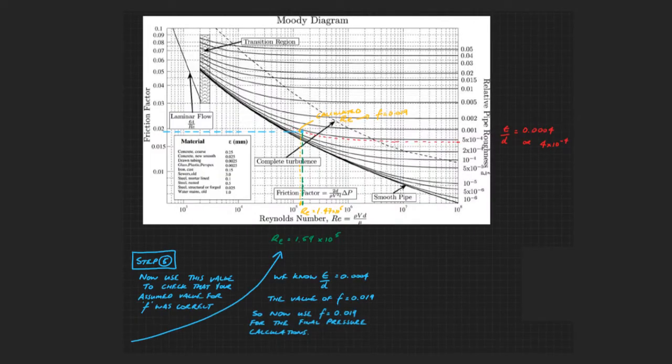Step five, now we've got a Reynolds number. We can plot that on the Moody chart. We know our value of epsilon over D is 0.0004. That's the relative pipe roughness. And then we can follow the chart and see the point where the two lines intersect. And at that point, we can read off the friction factor.